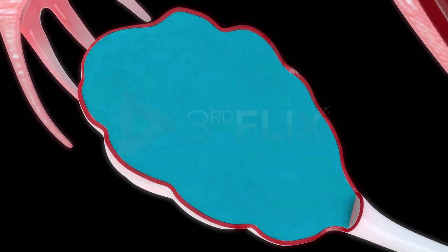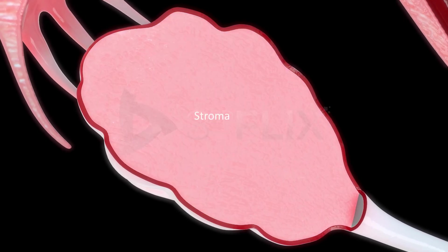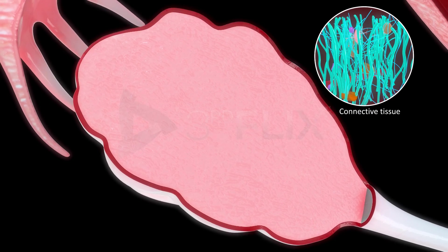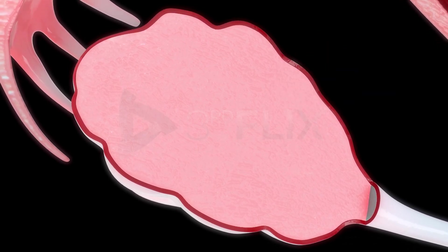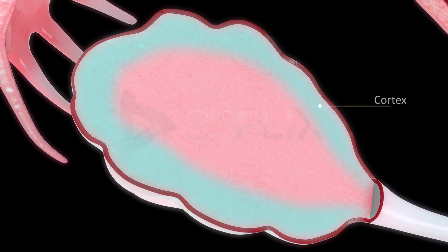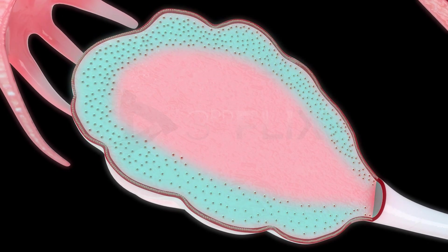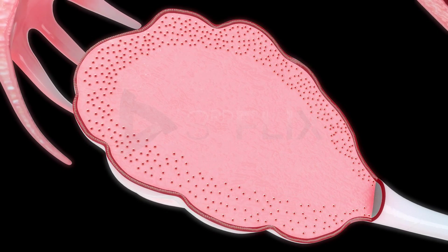Inner to the tunica albuginea lies the stroma, which is made up of connective tissue. The stroma is differentiated into an outer cortex and inner medulla. The cortex appears denser and more granular than the medulla.